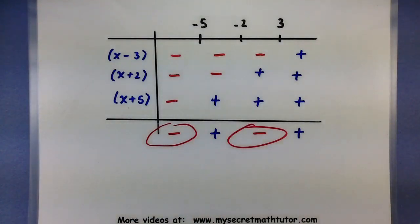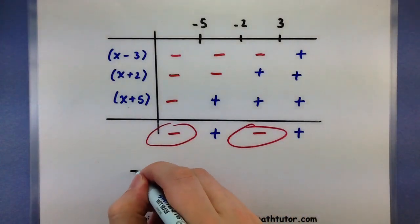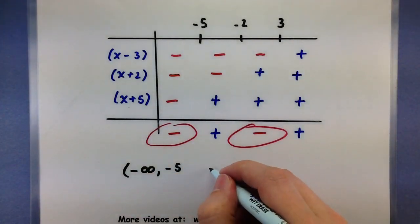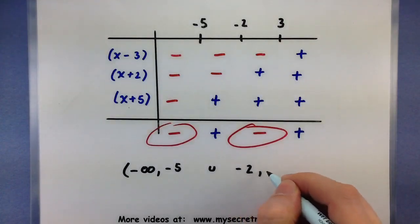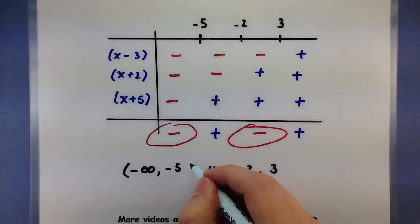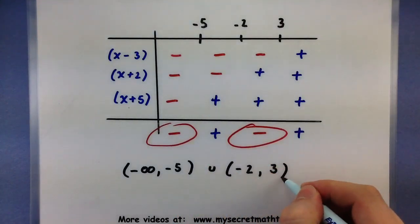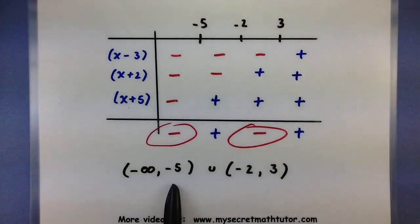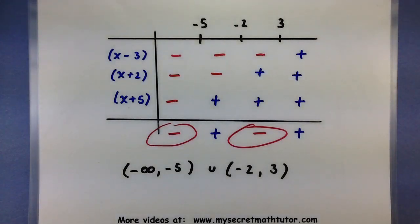The polynomial is less than zero on two different intervals. The first goes from negative infinity all the way up to negative 5. Then we go from negative 2 up to 3. Since our inequality says strictly less than zero, we don't want to include any of these endpoints, so I'll use parentheses to show they are not included. The solution is everything from negative infinity to negative 5, union negative 2 to 3. Now let's do one more example so you have the process down.